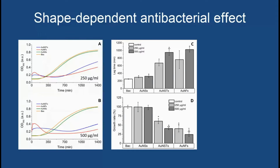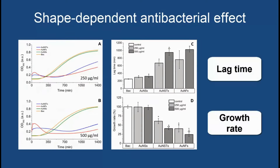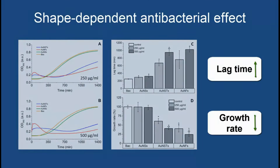Optical growth curve measurements and subsequent Gompertz modeling showed a significant gold nanoparticle shape and concentration dependent decrease in bacterial growth, with increases in bacterial growth lag time for both gold nanostars and even more so for gold nanoflowers. The antibacterial effect increases with increasing surface area and protrusions.